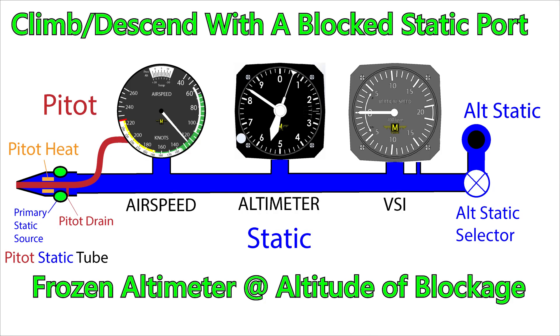If you know you're climbing or descending and your altimeter isn't moving, then you can suspect a blocked static port. It will freeze at the altitude where the static system got blocked. But it's really no big deal — you'd switch over to the alternate static source. Check the flight manual, though, because the alternate static source is at a different spot and so there will be a slight error in the readings, but your flight manual will tell you how much.